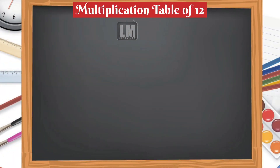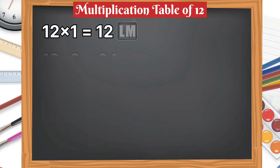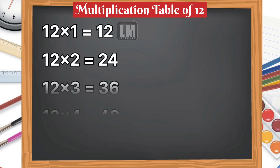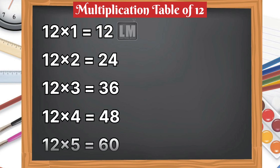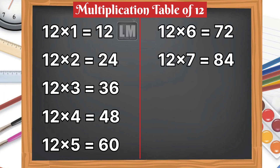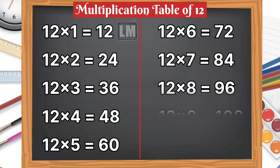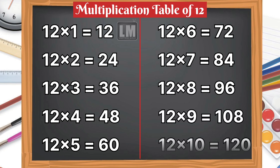Let's learn table of 12. 12 1s are 12, 12 2s are 24, 12 3s are 36, 12 4s are 48, 12 5s are 60, 12 6s are 72, 12 7s are 84, 12 8s are 96, 12 9s are 108, 12 10s are 120.